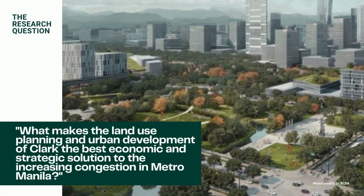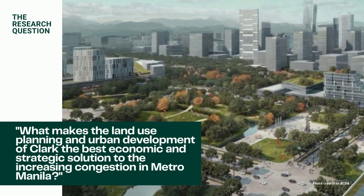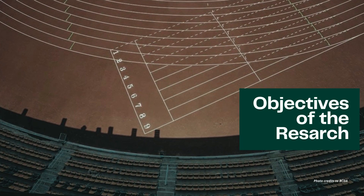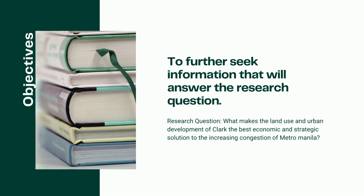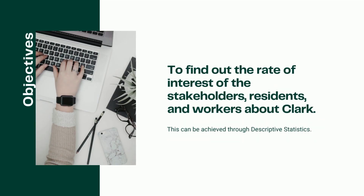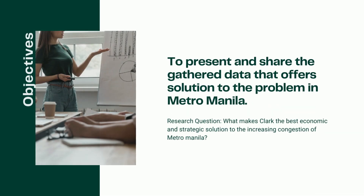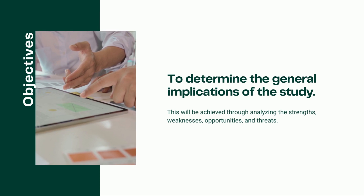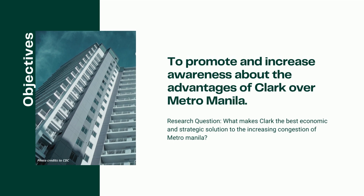The research question is: what makes the land use planning and urban development of Clark the best economic and strategic solution to the increasing congestion in Metro Manila? The objectives of the research are: first, to further seek information that will answer the research question; second, to find out the rate of interest of the stakeholders; third, to present and share gathered data that offers solution to the problem in Metro Manila; fourth, to determine the general implications of the study; and lastly, to promote and increase awareness about the advantages of Clark over Metro Manila.